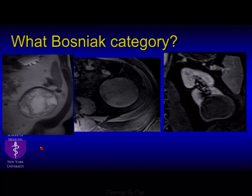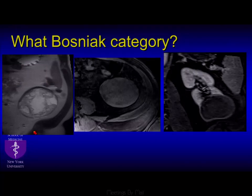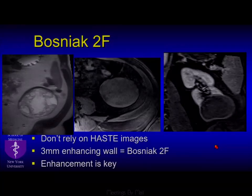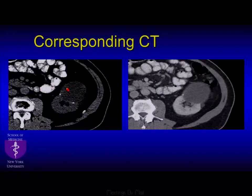Dr. Bosniak used to say T2-weighted imaging on MRI was like the ultrasound of the modality — you see a lot of stuff that looks ugly and you don't know what to do with it. Looking at a T2 image you might call something a Bosniak 4, but the key point he always stressed was: you can't just have morphology, you need morphology plus some functional or perfusional measurement showing vascular recruitment. If septa visible on T2 are not enhancing, and the only finding is a three-millimeter smooth wall, that's a Bosniak 2F. Anything ugly you see on HASTE should be ignored — enhancement is key. This case was followed over several years and eventually shrunk to nothing.